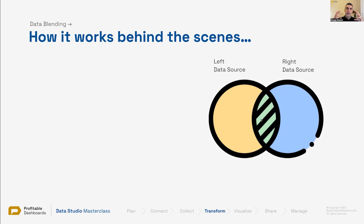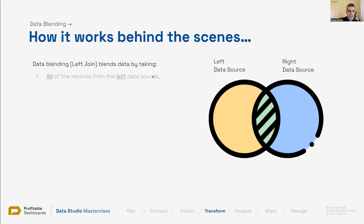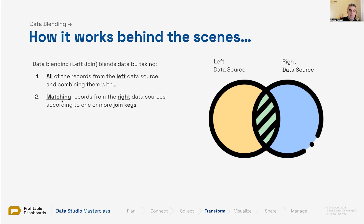The way data blending works is that it brings the second data source — the right data source — and tries to find the matching portion of the right data source and merge it with the left data source. Data blending takes all of the records from the left data source and combines them with matching records from the right data source.